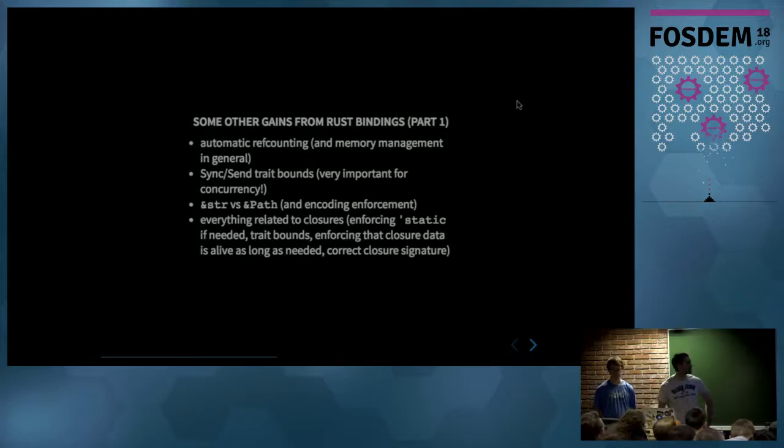So some of their gains. There are quite a lot brought by Rust directly. Automatic reference counting and memory management brought by the Rust compiler directly. The same concentrate bonds, which are used for signals, for example. So like that, you're sure your object won't be destroyed and called after being destroyed. And we enforce when we generate the API that if you want a string or path, to be sure you won't try to do something strange at best.